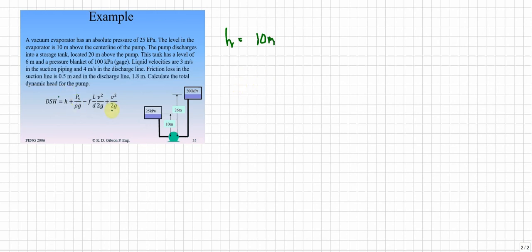As far as the PS over ρG, well PS that's pressure in the tank over ρ times G. Anyway our pressure is 25,000. 25,000 that would be 25 kPa.